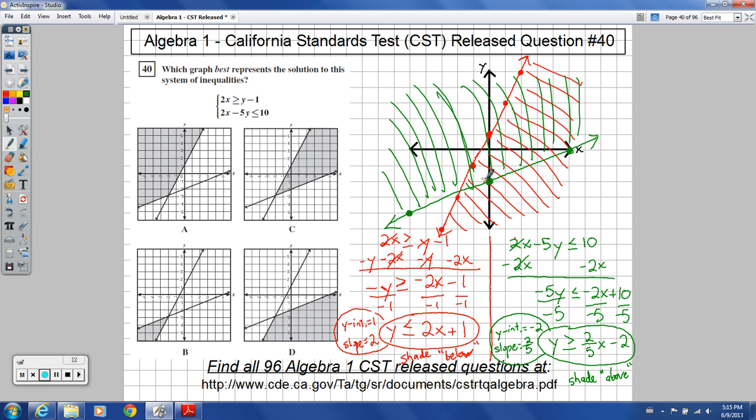Now your answer, your solution is where is it shaded in both red and green. I'm going to use a highlighter to make this real clear. Here it is shaded both red and green. And so this is our solution set.